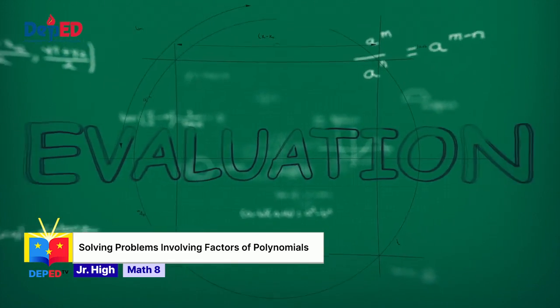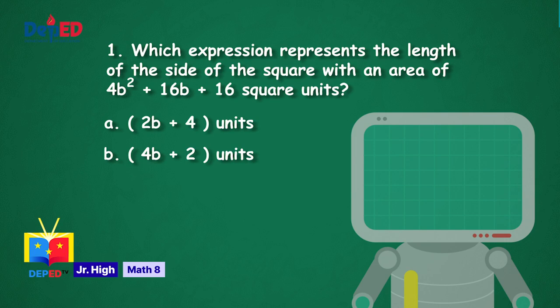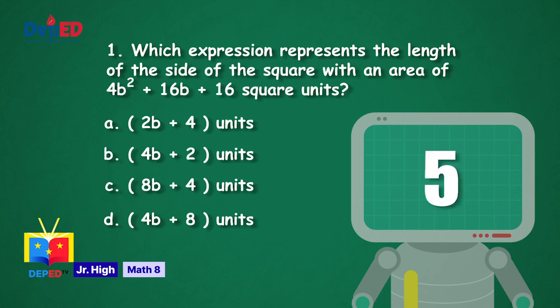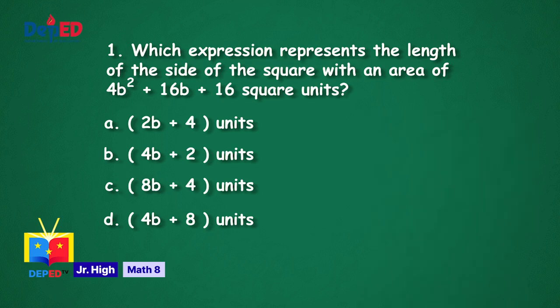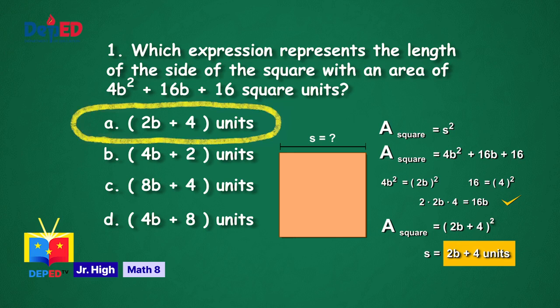Number 1. Which expression represents the length of the side of the square with an area of 4b squared plus 16b plus 16 square units? Is it A, 2b plus 4 units? B, 4b plus 2 units? C, 8b plus 4 units? Or D, 4b plus 8 units? The correct answer is letter A, 2b plus 4 units.